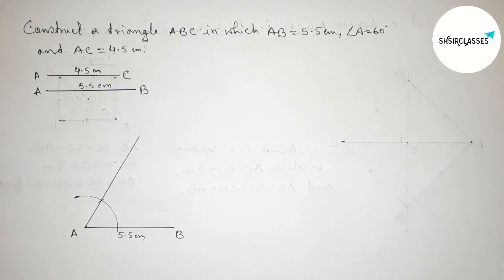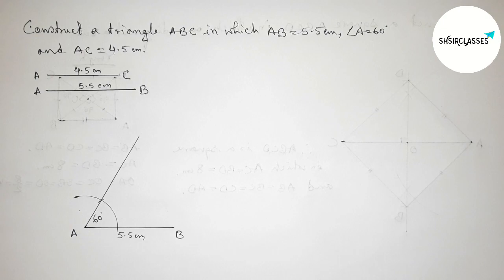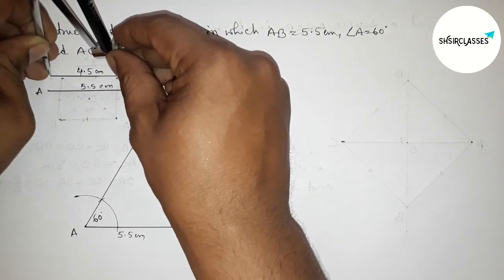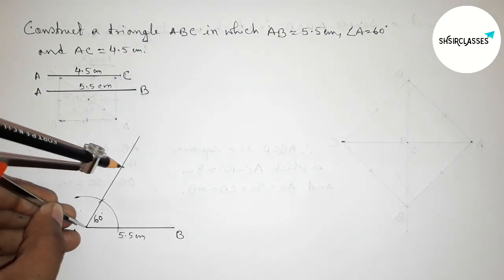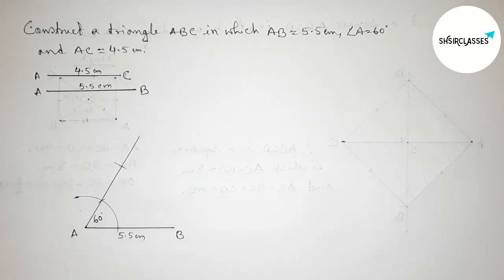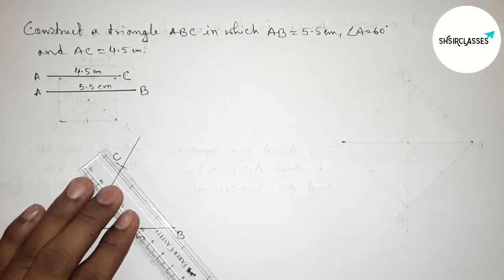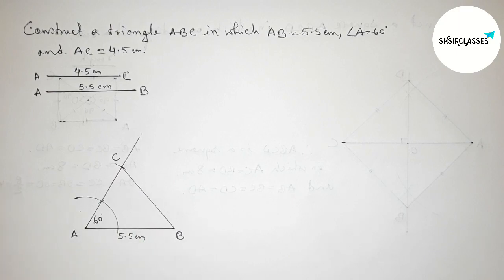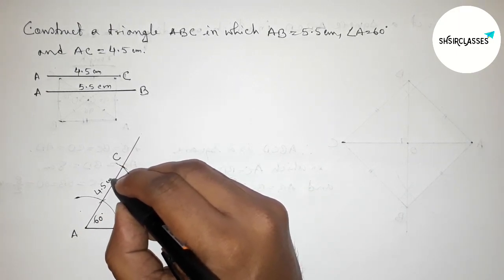Angle A equals 60 degrees. Next, taking the length AC equals 4.5 centimeters with the compass. Putting the compass on point A and cutting the arc along the 60 degree ray to mark point C. Now joining side BC to complete triangle ABC, where AC equals 4.5 centimeters.